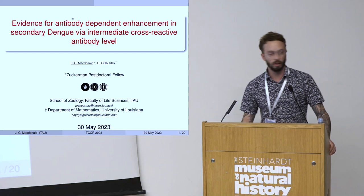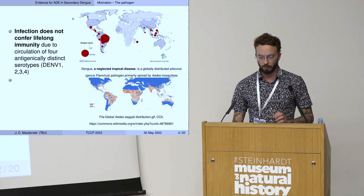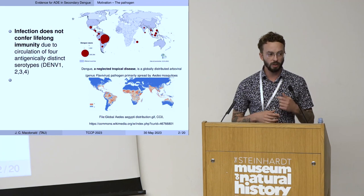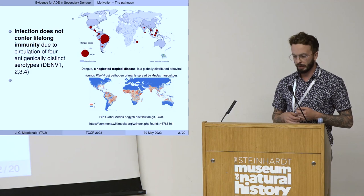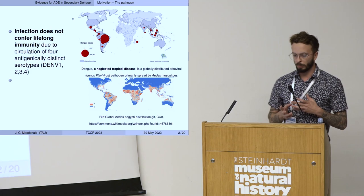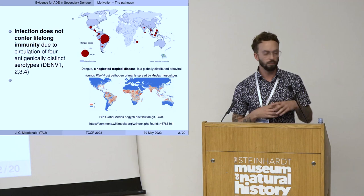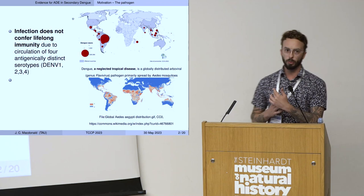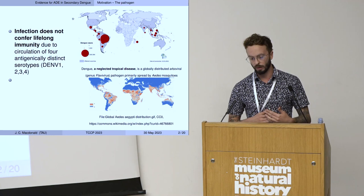A little bit of background about dengue: it is one of a suite of diseases known as neglected tropical diseases. It's globally distributed but particularly prevalent in South America and Southeast Asia, and it's an arbovirus pathogen primarily spread by Aedes mosquitoes. Beyond being globally distributed — roughly 390 million people per year — with climate change, the ranges of Aedes mosquitoes are shifting, creating potential invasion into new geographic territory.